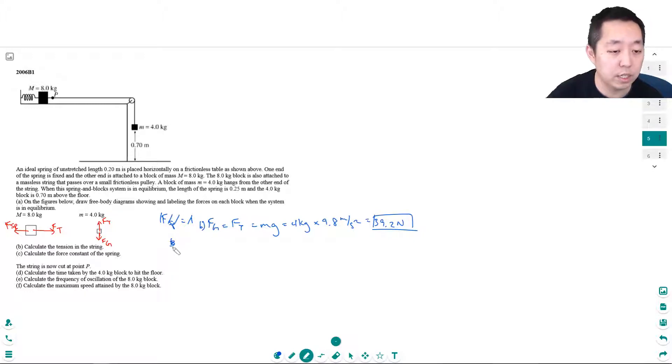Calculate the force constant of the spring. Well the tension force has to equal the spring force, so that means k times delta x has to equal 39.2 newtons, and that means k has to be 39.2 newtons divided by delta x.